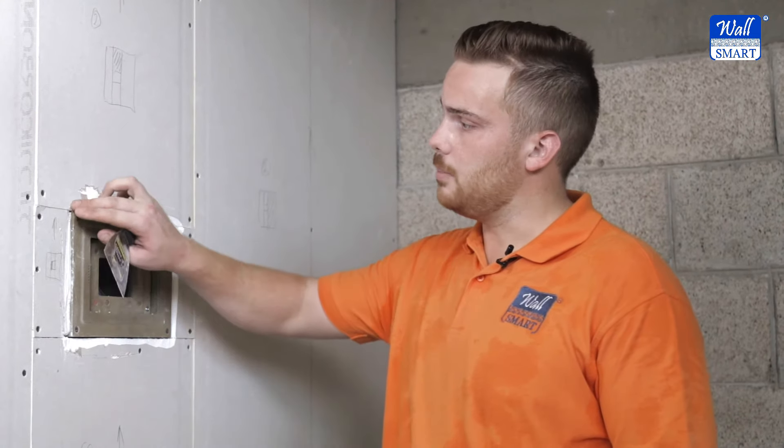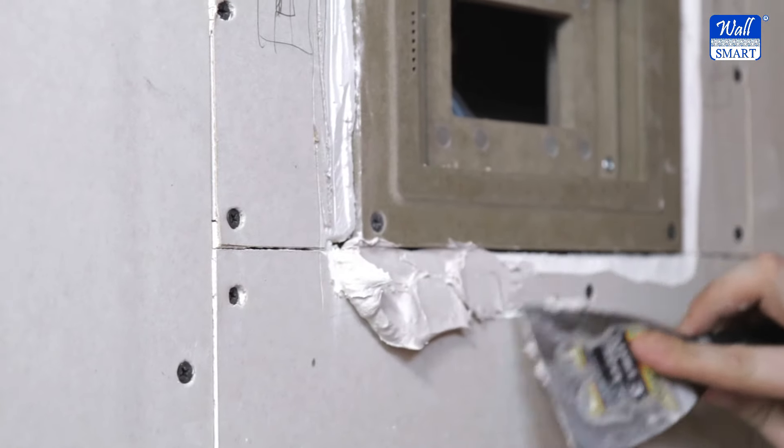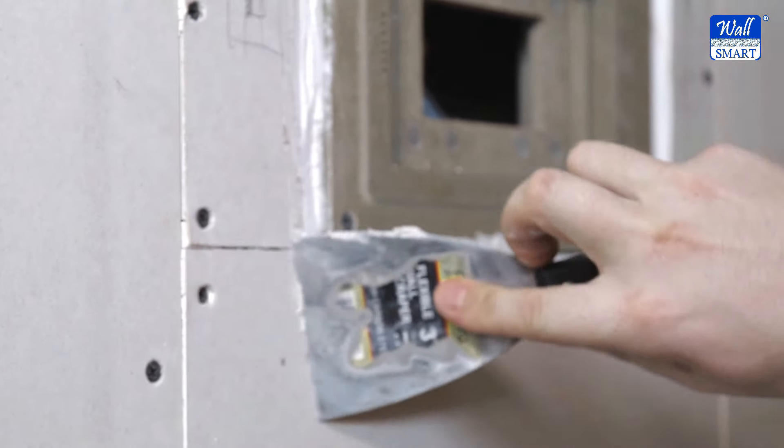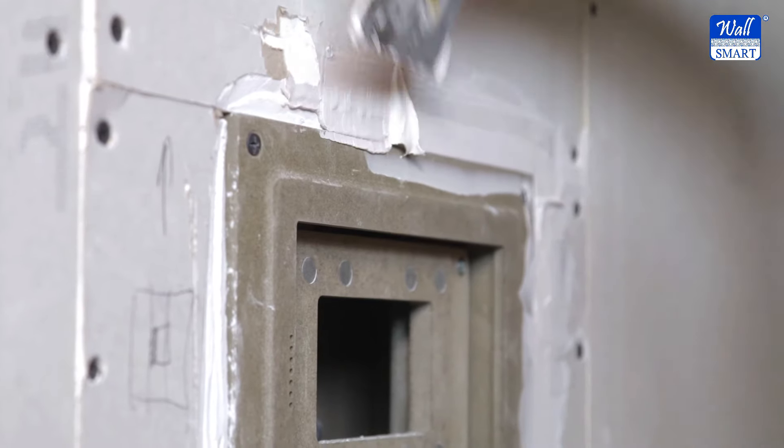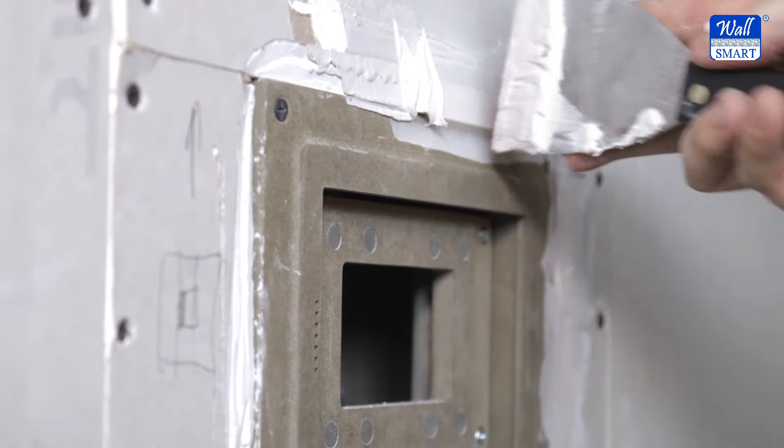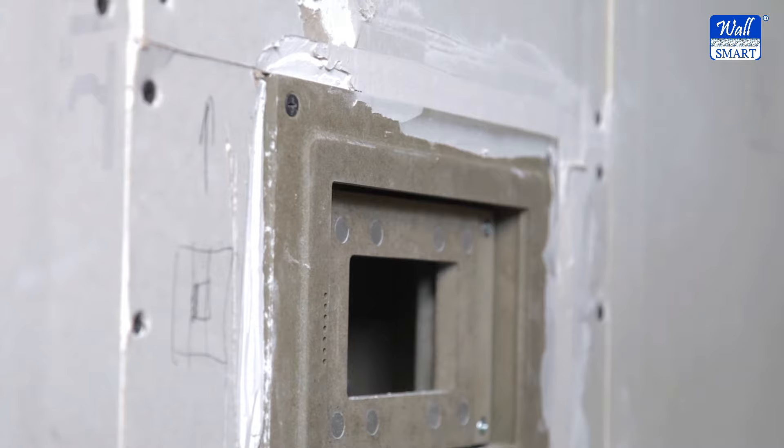For better rigidity, apply setting type compound in the gap between the mount and the drywall. Pay attention to apply setting type compound to the gap between the mount and the drywall only. Do not apply setting type compound in the wall mount front groove.